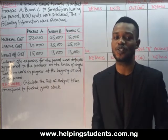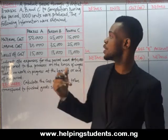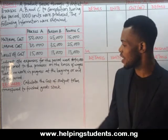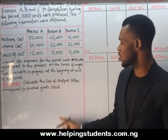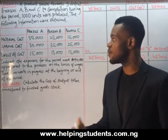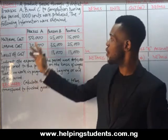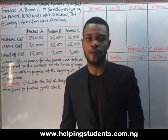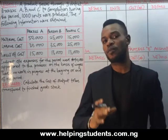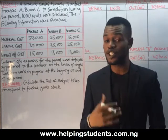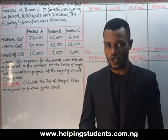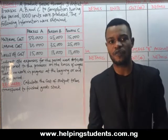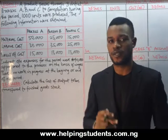Hello viewers, you are highly welcome for today's tutorial. On the board we have a question under process costing, and we have been asked to calculate the cost of the outputs to be transferred to the finished goods. We have process A, process B, and process C. Watch the way I am going to explain and solve this question — I will try to break it down for you to have a better understanding.